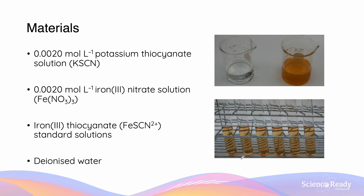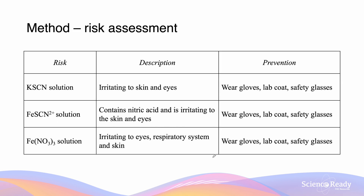We discussed the iron thiocyanate equilibrium in a previous video. The reason why the solutions are not blood red is because of the levels of dilution. Things to consider in our risk assessment include the thiocyanate solution, which is irritating to our skin and eyes; the thiocyanate standard solution, which contains nitric acid and is irritating to our skin and eyes; and the iron nitrate solution, which is irritating to our eyes, respiratory system, and skin.